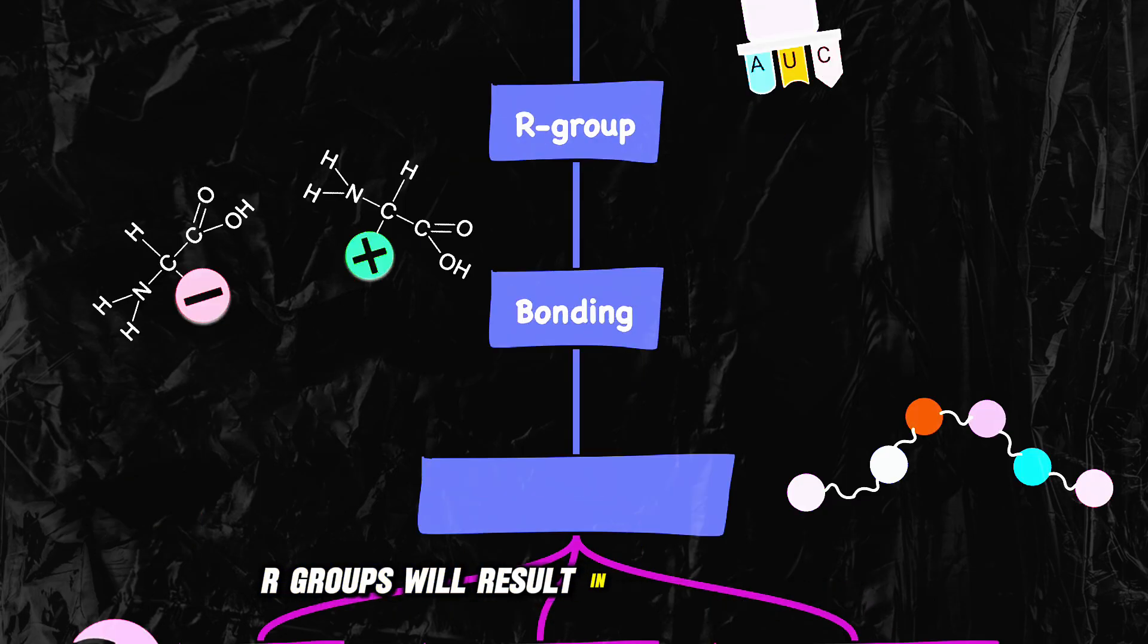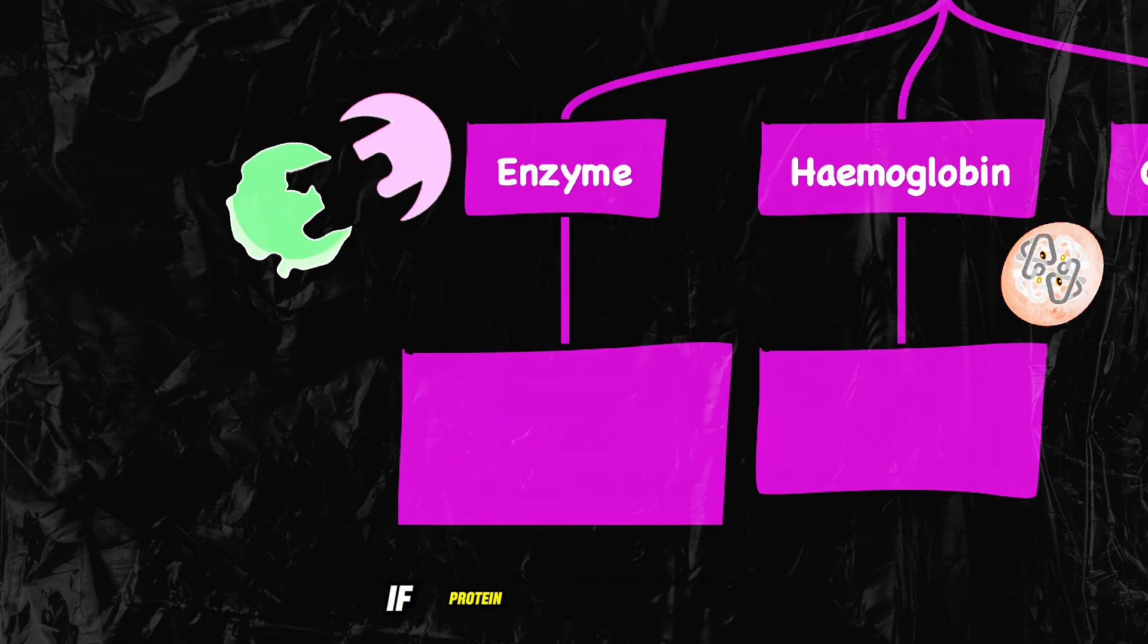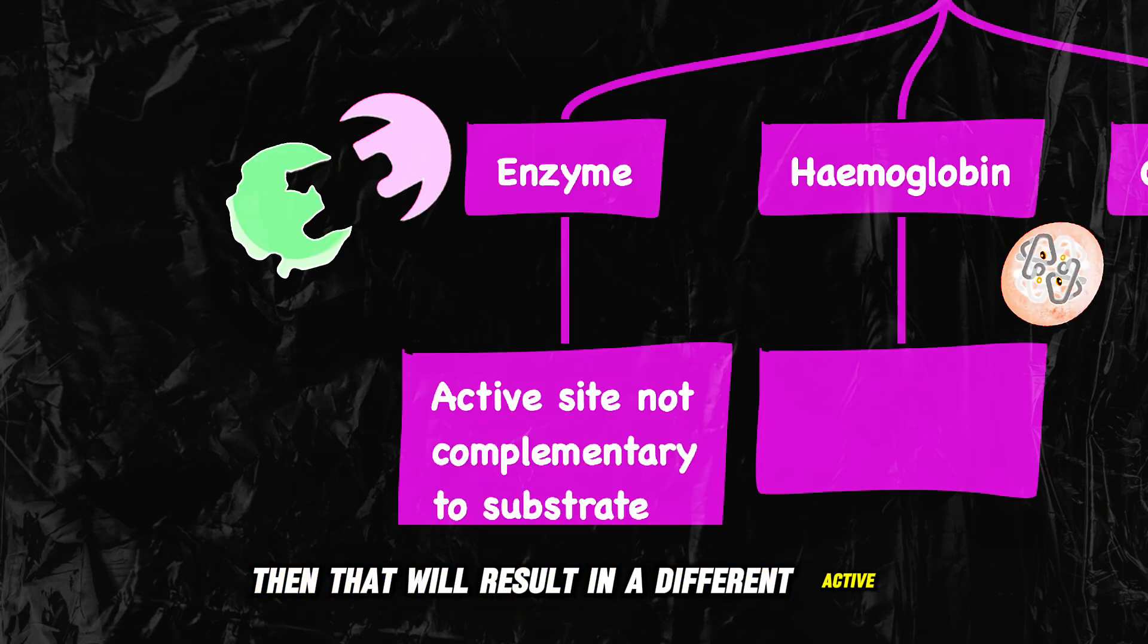The different R groups will result in different types of bonding and different 3D shape of the protein. If the protein was an enzyme, then that will result in a different active site.